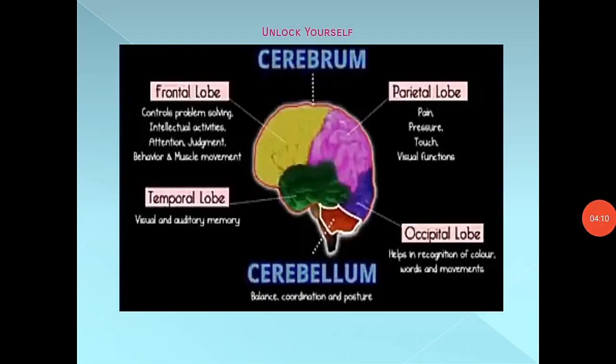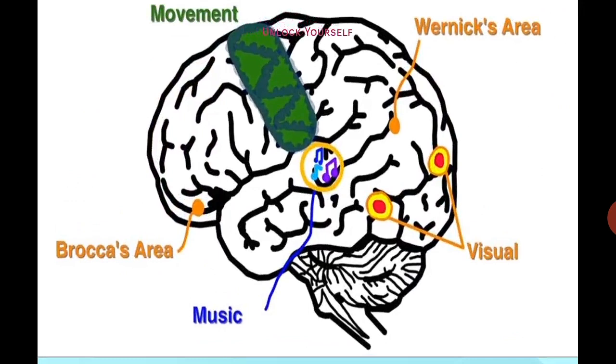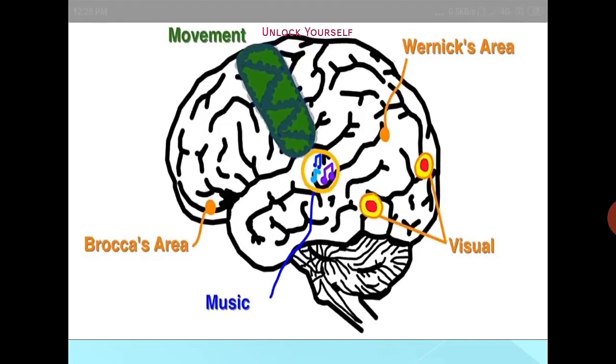The cerebrum can be divided into four lobes: the frontal lobe, parietal lobe, occipital lobe, and temporal lobe. The frontal lobe lies in the anterior part of the brain. The frontal lobe of the left hemisphere has an area called Broca's area, discovered by Paul Broca in 1861, which controls articulated speech. Here you can see the Broca's area marked in the frontal lobe; damage to this area can result in apraxia, or inability to make voluntary speech movements.